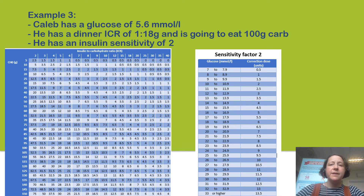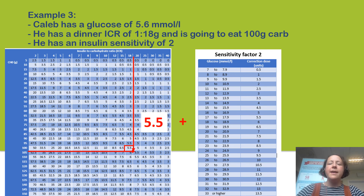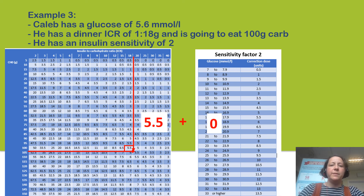In our final example, Caleb is about to eat his evening meal. He's going to eat 100 grams of carbs and has an ICR of 1 unit for 18 grams. His glucose reading prior to eating is 5.6 millimoles per litre and his sensitivity factor is 2. Reading across from 100 grams and down from ICR of 18, the dose of insulin to cover the carbohydrates is 5.5 units. Since his glucose of 5.6 is within the target range of 4 to 7, no extra correction insulin is needed. His total bolus dose is 5.5 units plus 0 units, giving 5.5 units.